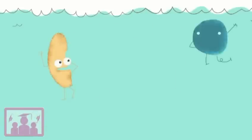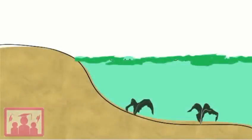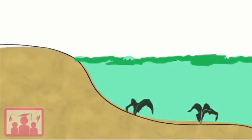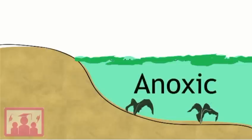The bacteria, with a continuing supply of food, reproduce into much larger numbers, consuming oxygen as they grow and respire. There is not much oxygen in the water to begin with, so when the bacteria consume it quickly, it might run out completely. Water without oxygen is called anoxic.